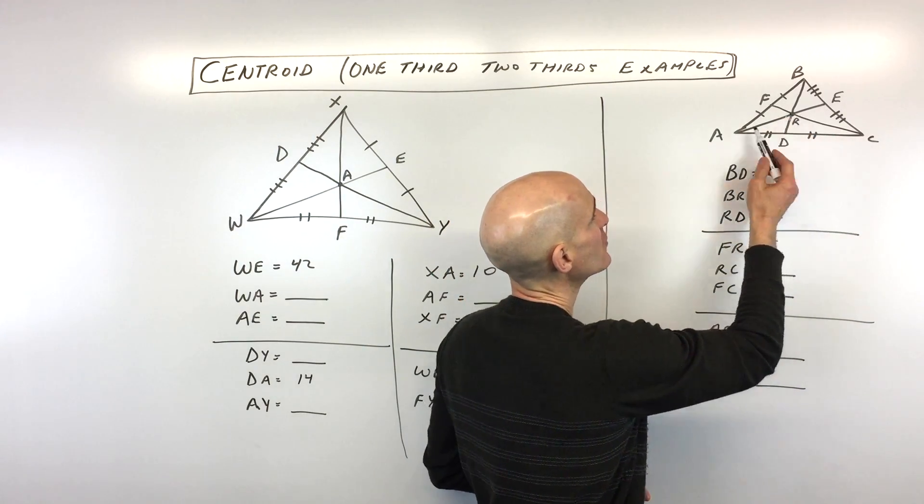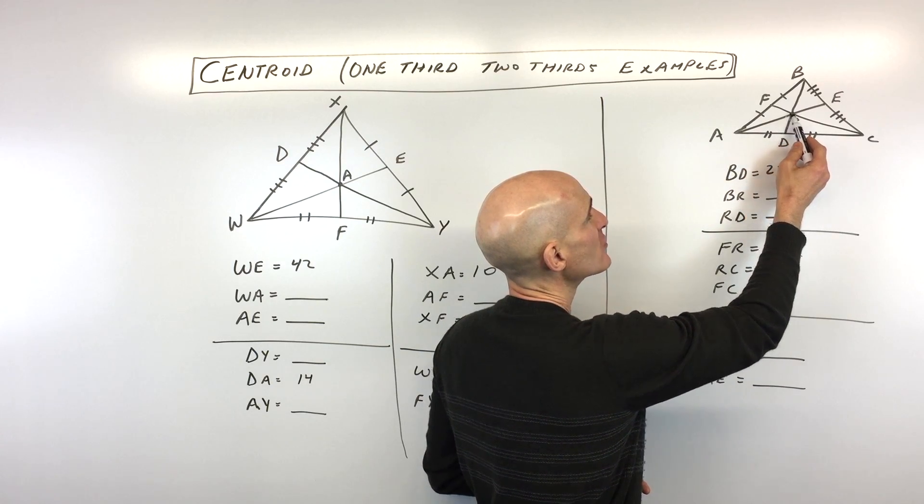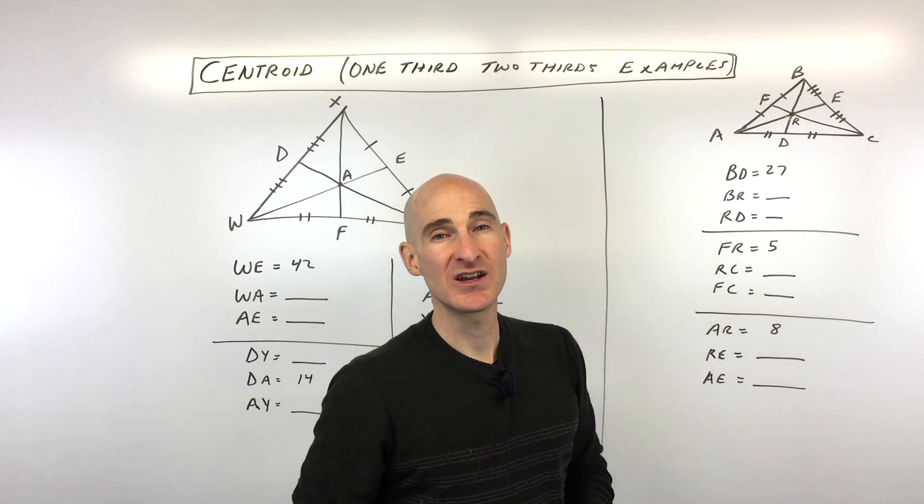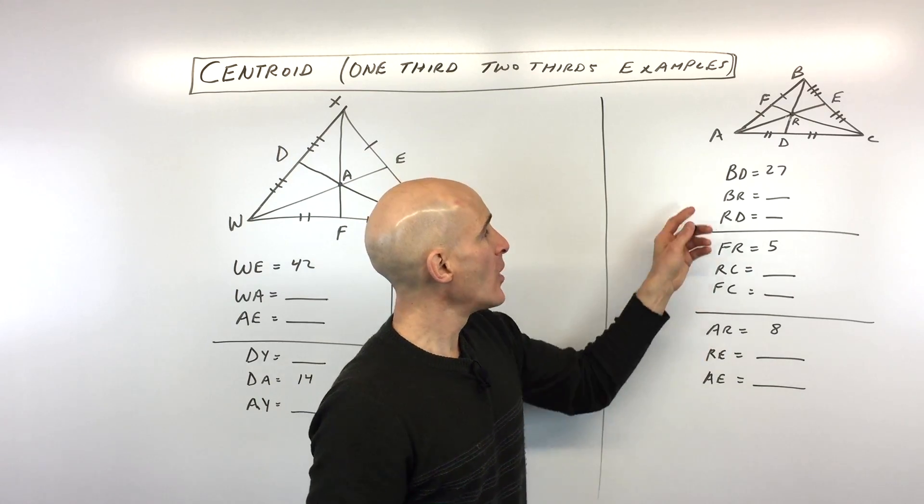So here you can see CR is two-thirds, AR is going to be the two-thirds. So from the vertex to the centroid, that's the longer piece, the two-thirds.